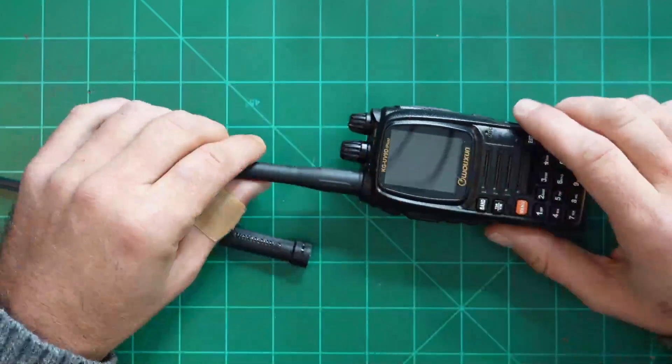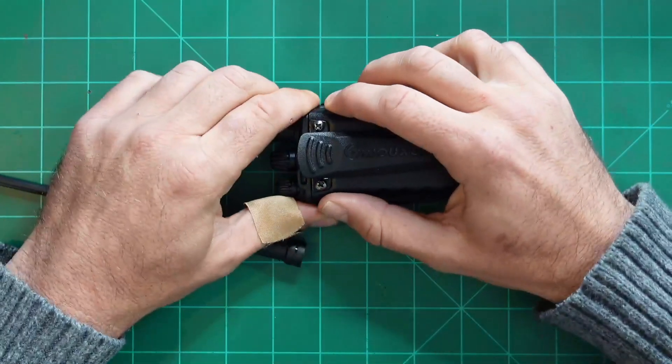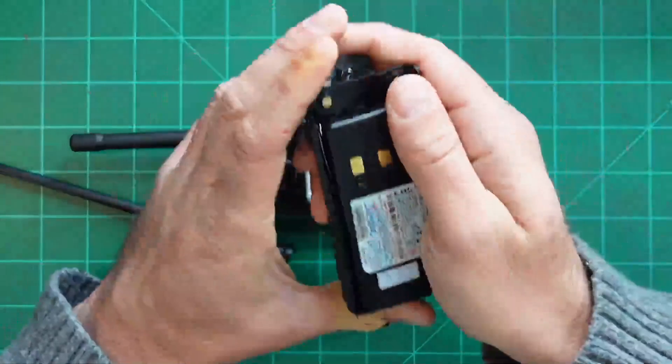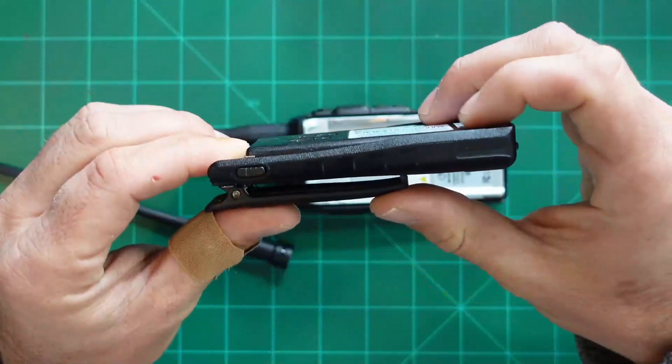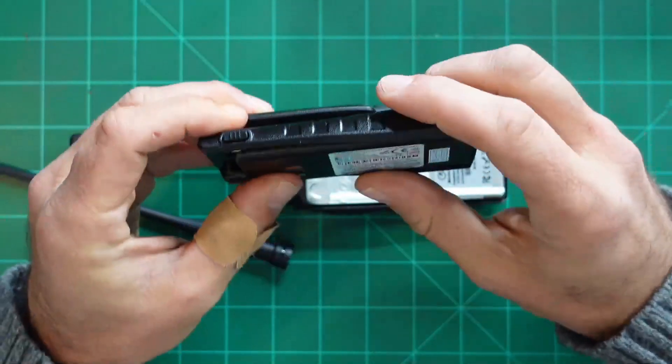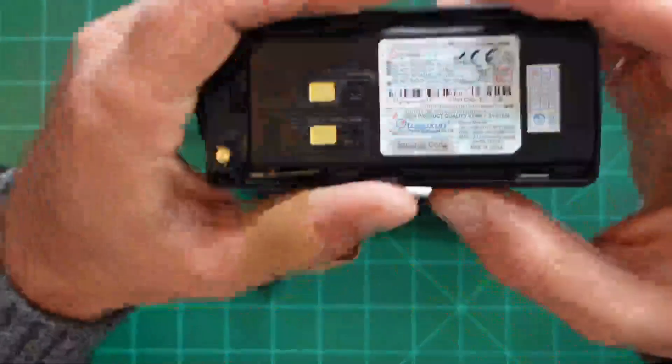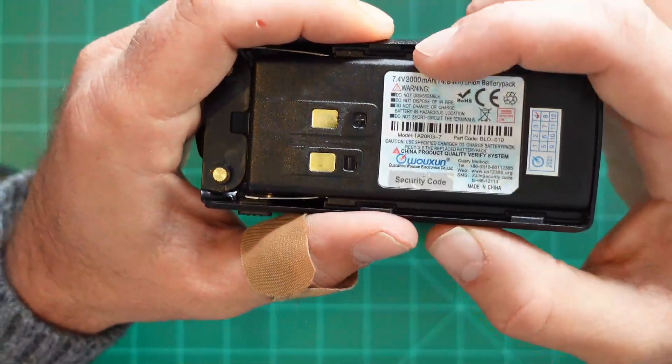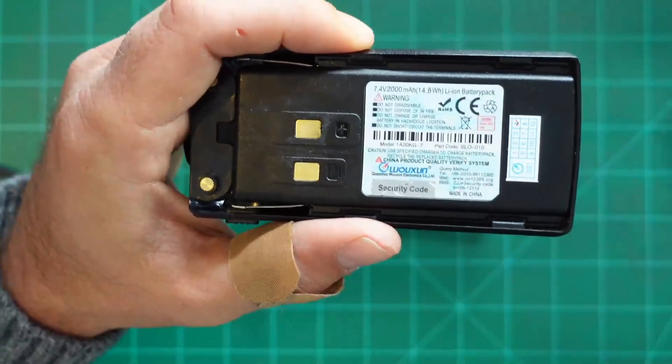The next thing I want to discuss is the 2000 milliamp hour battery. And the thing about the 2000 milliamp hour battery is I thought no way that this is a 2000 milliamp hour battery, but I was wrong. And here we are with the battery. It says 2000 milliamp hours, and I just didn't trust it.